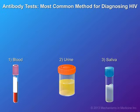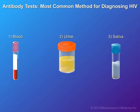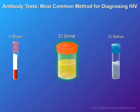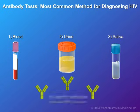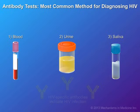An antibody test is the most common type of test used to diagnose HIV. Antibody tests look for HIV antibodies in blood, urine, or saliva. If antibodies to HIV are detected, it means you have been infected with HIV.